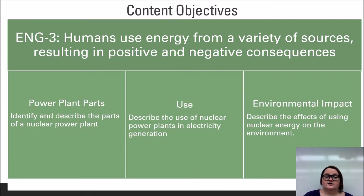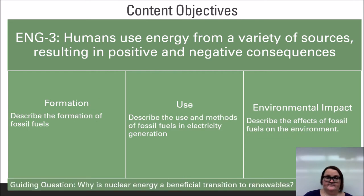By the end of this lesson you should be able to identify and describe the parts of a nuclear power plant, describe the use of nuclear power plants in electricity generation, and describe the effects of using nuclear energy on the environment. This leads us to the guiding question: why is nuclear energy a beneficial transition to renewables?